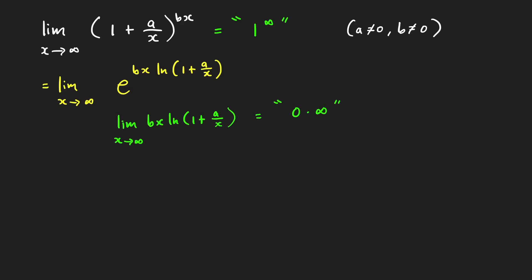To evaluate that limit, we write it in the form either 0 over 0 or infinity over infinity. We write this limit as the limit as x approaches infinity of ln of (1 plus a over x) all over 1 over bx. This is already in the form 0 over 0, since ln of 1 is 0.